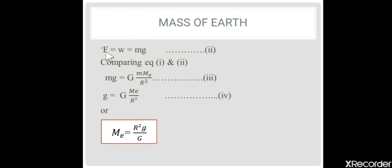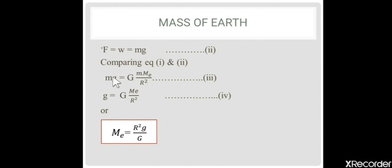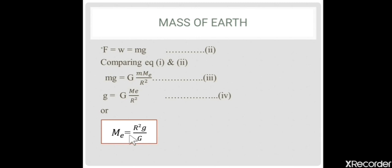Since both equations represent the same force of gravitation, we compare equation 1 with equation 2. We get: mg = G × m × ME / R². This M cancels out, giving: g = G × ME / R². This is the formula for acceleration due to gravity on the surface of Earth. But we have to find the mass of the Earth, so we isolate ME. We get: ME = R² × g / G. This is the formula used to find the mass of the Earth.